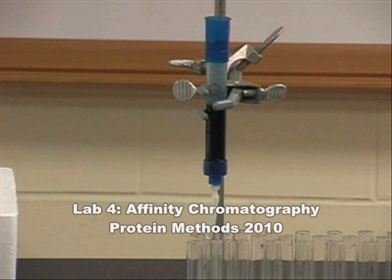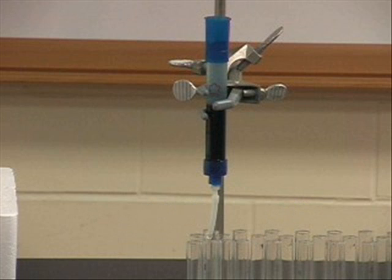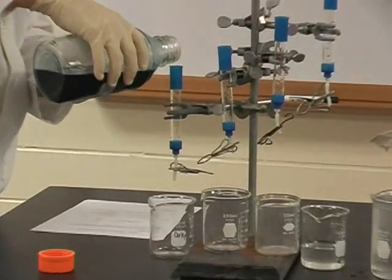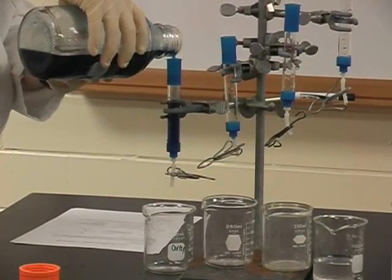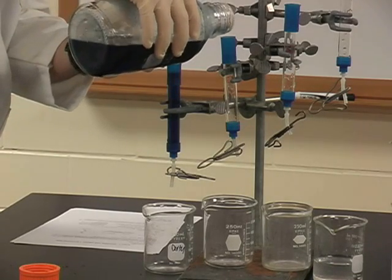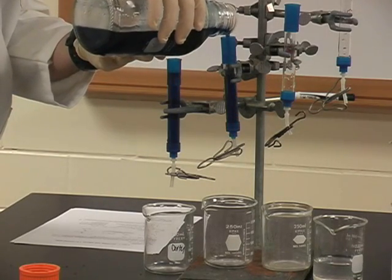Today we will be discussing Lab 4 Affinity Chromatography. In this lab we will be using Cyprochron Blue F3GA dye bound to an agarose bead to separate out the lactate dehydrogenase in our sample from the other bulk proteins in our sample.